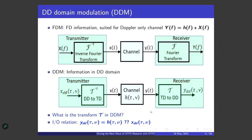The transform converts the information signal to a time-domain signal — the only kind we can physically transmit. The received signal is then converted back to the delay-Doppler domain using the same transform. The key question is: what is the relationship between the received DD signal y_dd(τ, ν) and the transmitted DD signal x_dd(τ, ν) for a doubly spread channel?